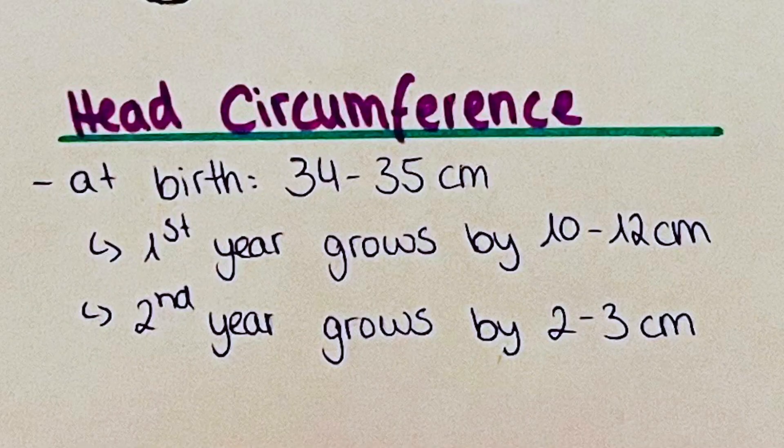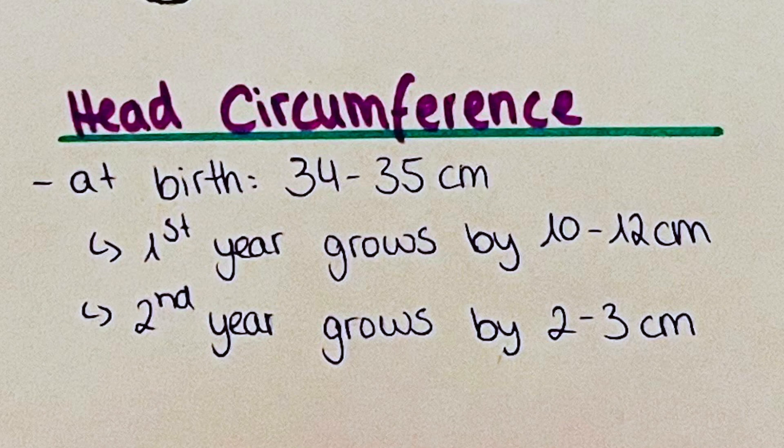The head circumference is a measurement which we use a tape meter and we place it so that it passes from the frontal eminences of the frontal bone of the baby and around the protuberantia occipitalis posteriorly. We essentially measure the head size.